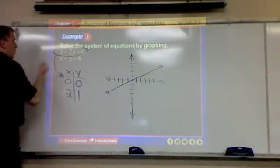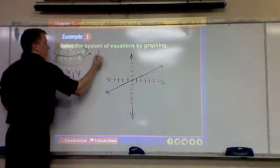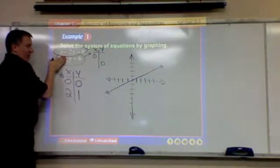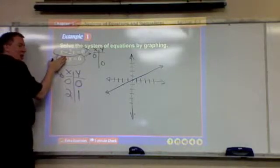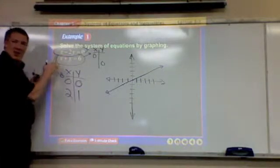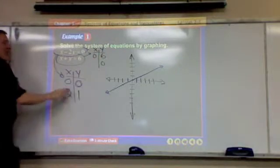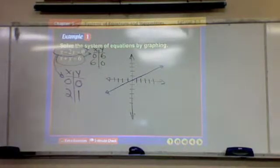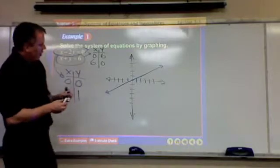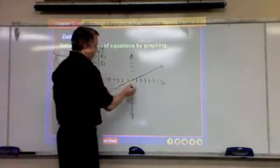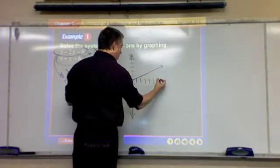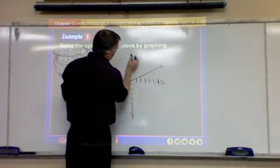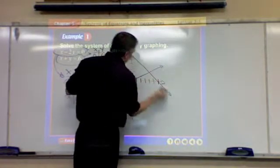Moving on to the next equation. This one's pretty easy. If x is zero, y is six. If y is zero, x is six. These values should add to six. So the two points are (0, 6) and (6, 0).